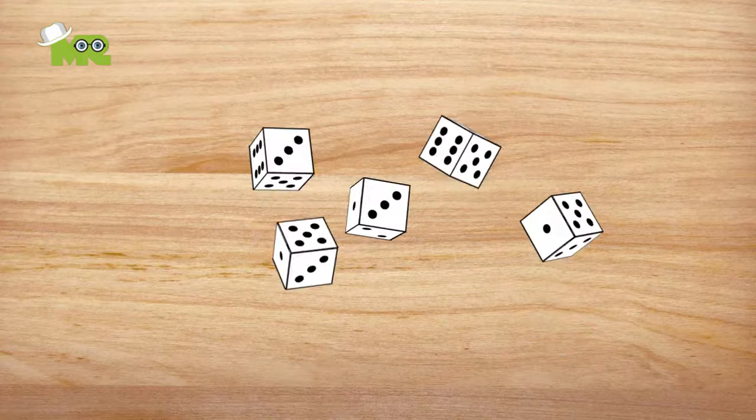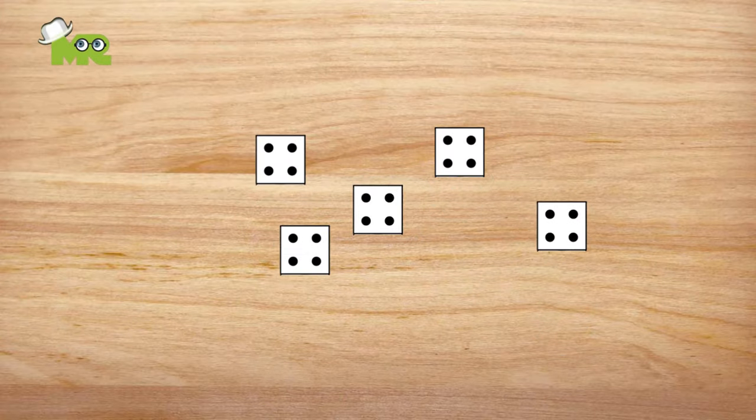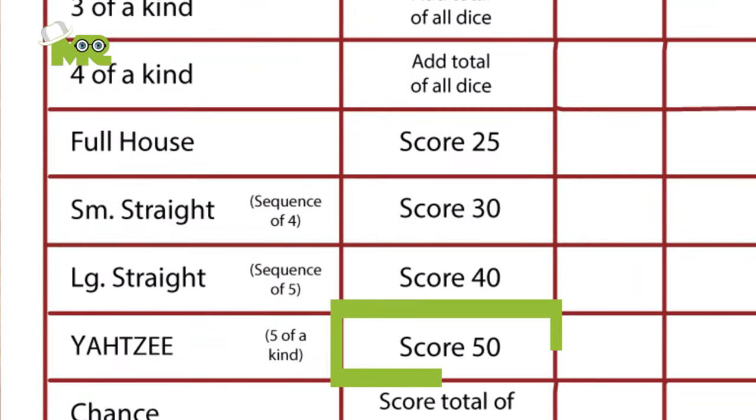If a player rolls all five dice with the same number, a Yahtzee occurs and 50 points are awarded.